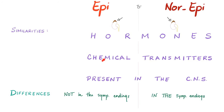Let's talk about the similarities and then the differences. Similarities: both of them are released by the adrenal medulla, both are hormones, both are chemical transmitters, and both are present in your central nervous system. Differences: epinephrine cannot be secreted by the postganglionic sympathetic fibers, however norepinephrine can.